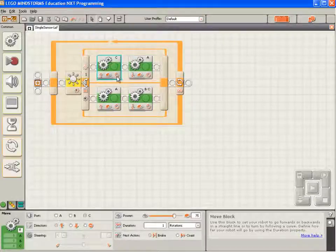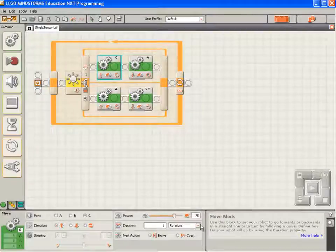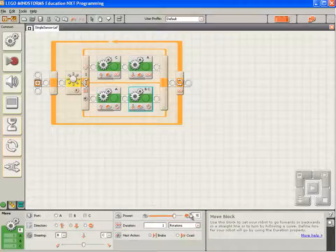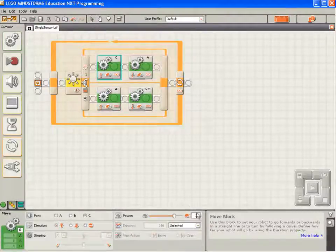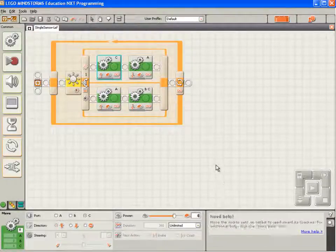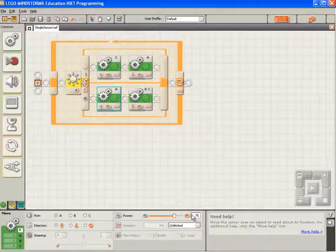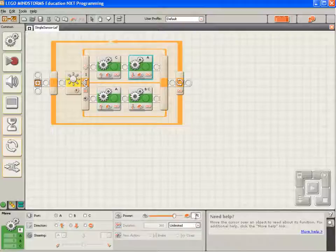One more thing to change. Notice how these are all set to run for one revolution, so we have to change that to unlimited. And we also know from experience that running at the default power of 75 is too fast. So we'll change that to 60 when we're running forward, and I have a guess at 20 when we're running backwards.